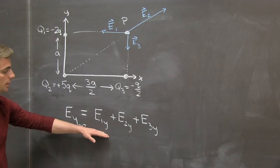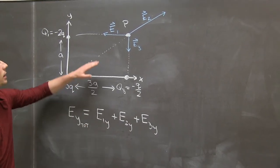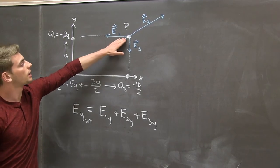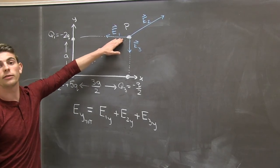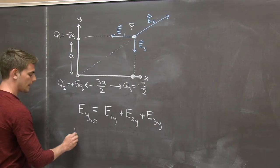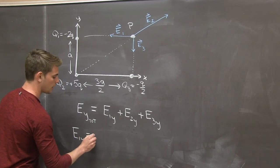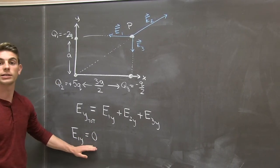Now taking these piece by piece, let's consider e1 first. We can see that e1 is horizontal to the left, meaning it only has an x component. So right away we know that e1 in the y direction is zero, and our life just got a little easier.